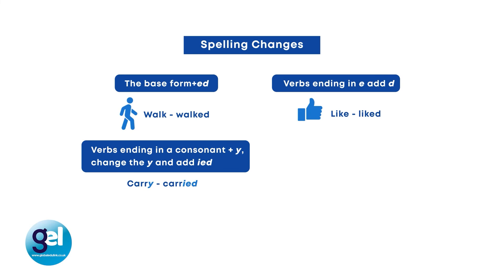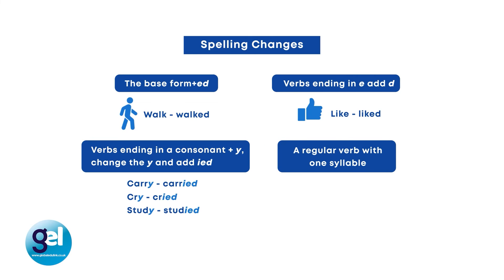Continuing spelling rules: 'study' takes off the Y and adds IED to become 'studied.' Also, with a regular verb of one syllable with a single vowel ending in a single consonant, we always double the last consonant — so 'stop' becomes 'stopped' (double P plus ED), 'rob' becomes 'robbed' (double B plus ED), and 'travel' becomes 'travelled' (double L plus ED). It's really important to make students aware of these rules, otherwise you will find quite strange variations of spelling.